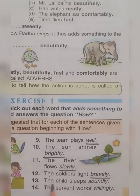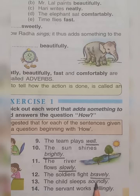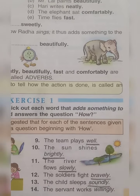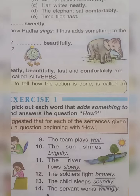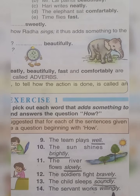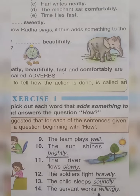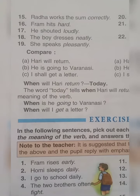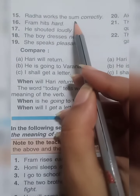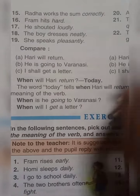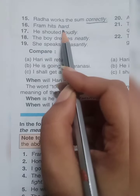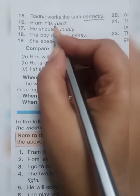Number 13: The child sleeps soundly. How does the child sleep? Soundly. Underline the word 'soundly.' Number 14: The servant works willingly. How does the servant work? Willingly. Underline 'willingly.' Turn your page to page number 28. Number 15: Radha works the sum correctly. Underline the word 'correctly.' Number 16: Fram hits hard. How does Fram hit? Hard. Underline the word 'hard.'